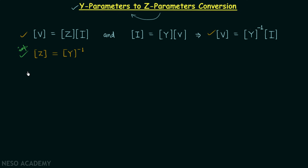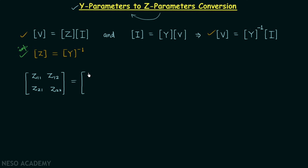Now, the impedance matrix is a 2×2 matrix having the elements z11, z12, z21, and z22 — these four parameters are known as Z parameters. The admittance matrix is also a 2×2 matrix, having the elements y11, y12.